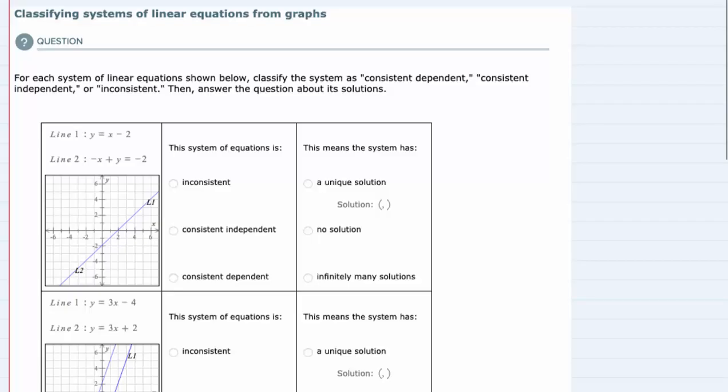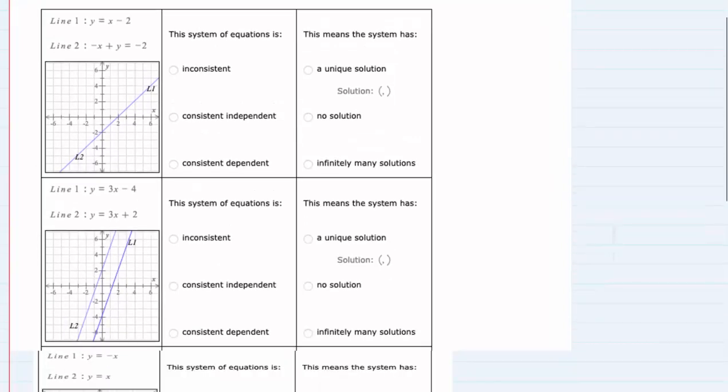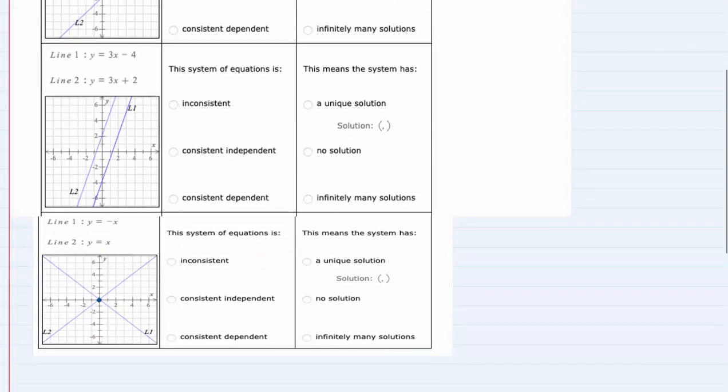In this example we're asked to classify systems of linear equations from their graphs. So we're given three different graphs. I'm actually going to start with the bottom one here.